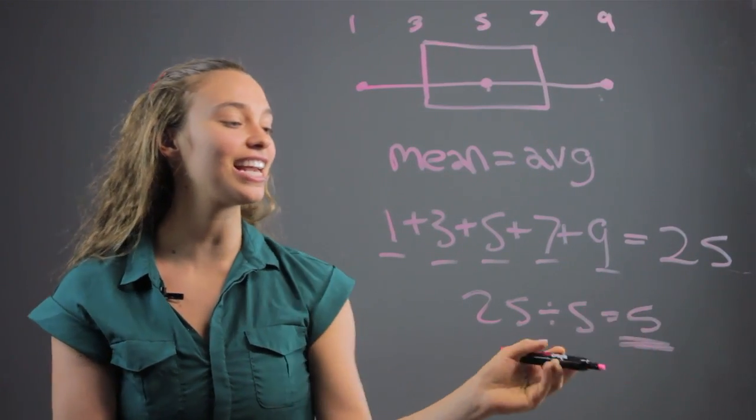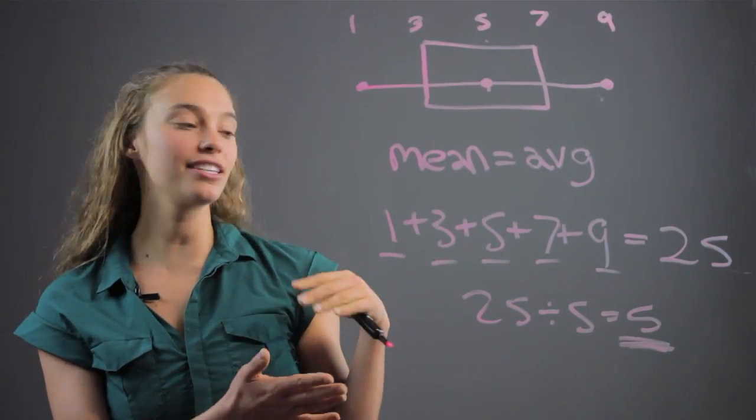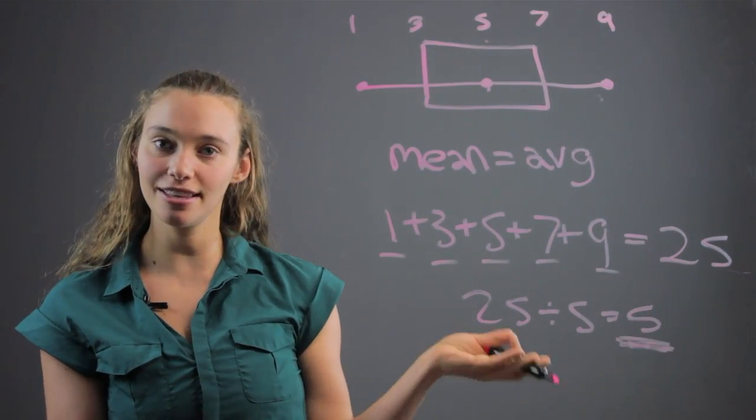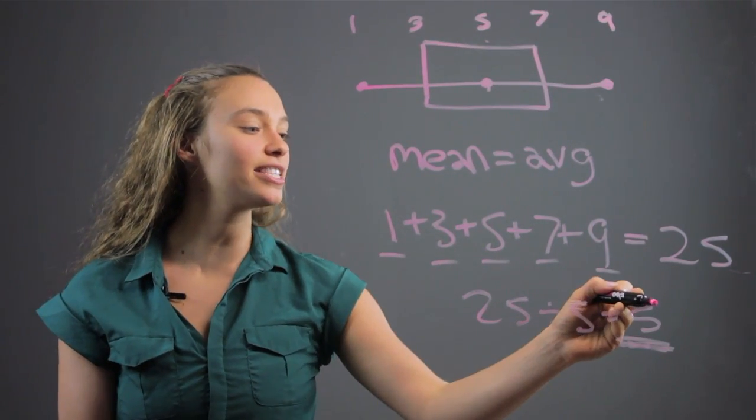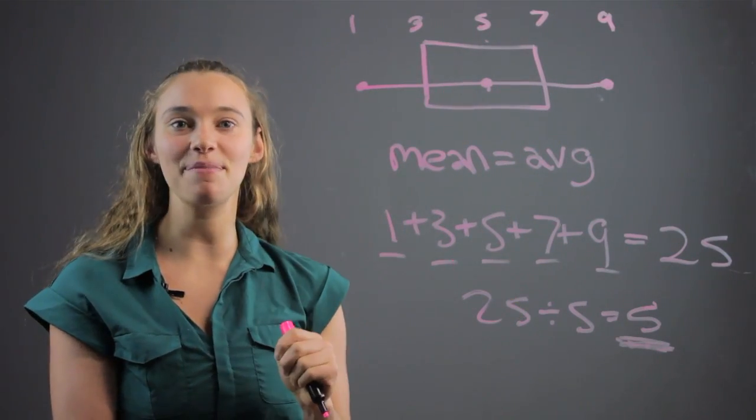So five, in this case, is our mean, as well as our median. This doesn't always happen, sometimes the mean can be different than the median, it often is, but in this case, we found the mean from the box and whiskers plot, and it ended up being five.